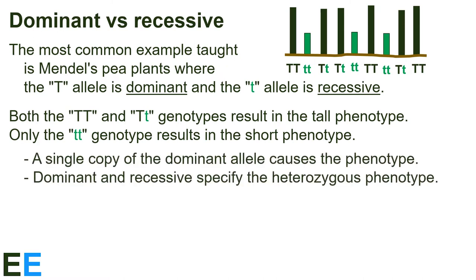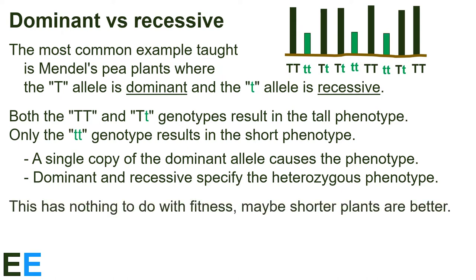Another way of saying this is that a single copy of the dominant allele causes the dominant phenotype, and the terms dominant and recessive specify what the heterozygous phenotype is. An important thing to notice is that this has nothing to do with fitness. Maybe shorter plants are better. To know whether a phenotype such as tall or short is advantageous or deleterious, we need to know more about the environment and lifestyle of the organism.